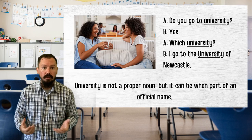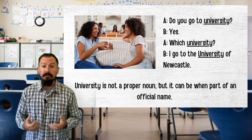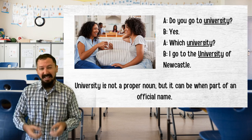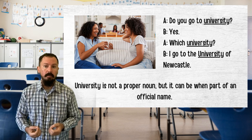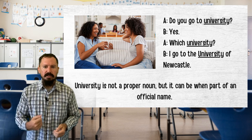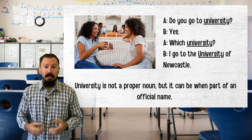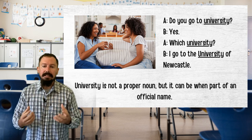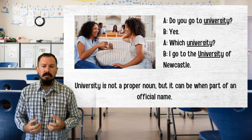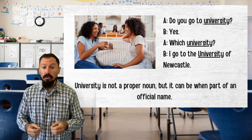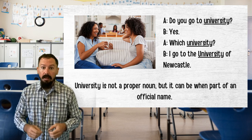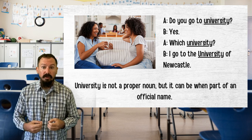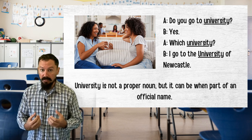A similar problem emerges with the word 'university' because it is often part of an official name, yet the word itself is not a proper noun. Whenever we talk generally about a university — referring to the idea of a university but not a specific one — we use a lowercase 'u'. However, when referring to the official name of a university, we must use a capital 'U'.